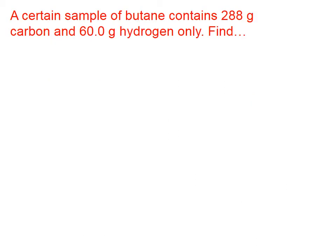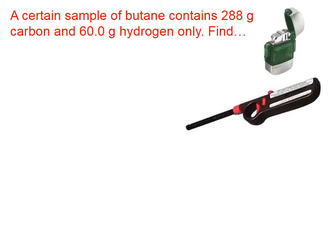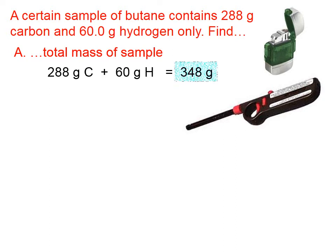A certain sample of butane contains 288 grams of carbon and 60 grams of hydrogen only — meaning there are no other elements in butane. Incidentally, butane is found in lighters and clickers; it's the fuel in those devices. To find the total mass of the sample, we simply add the grams of carbon and hydrogen together: 348 grams.